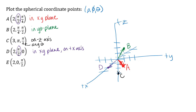For the last point, phi equals zero means no rotation down from the positive Z axis, so we're on the positive Z axis. Just like with point C on the negative Z axis, any theta value keeps you on the positive Z axis when phi is zero. With rho equals 2, the point is two units above the origin on the positive Z axis.